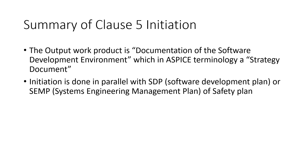Here is a summary of Clause 5, the software project initiation. The output work product is documentation of the software development environment, which in ASPICE is commonly termed a strategy document. This involves the complete plan for the project — your SDLC, tools, infrastructure requirements, and everything — describing how you will do it. The initiation is done in parallel with the SDP (software development plan), or SEMP (systems engineering management plan), or the safety management plan. Hope you got this concept. If you like this content, click the like button. For more automotive videos, subscribe to my channel. Thank you.